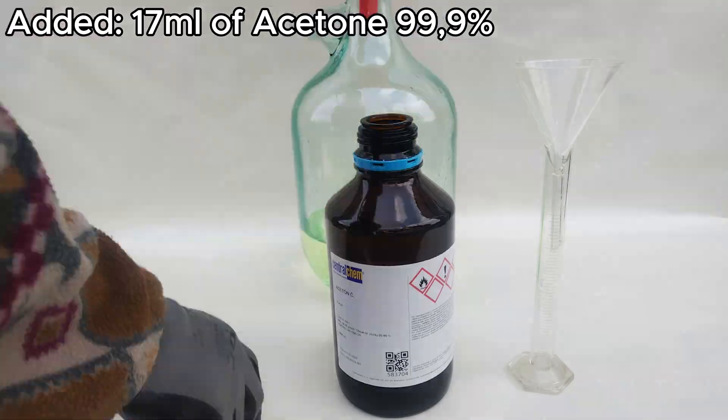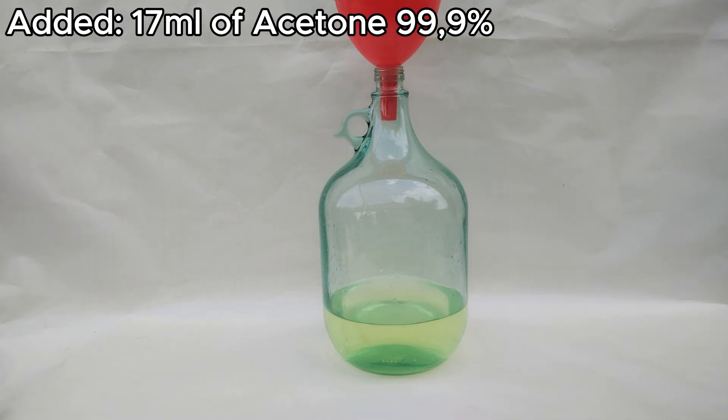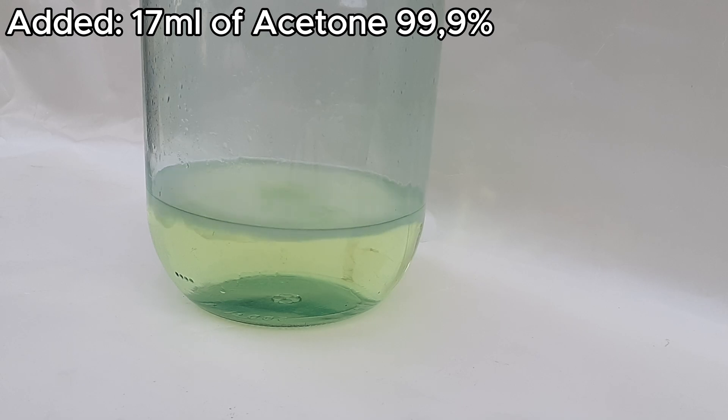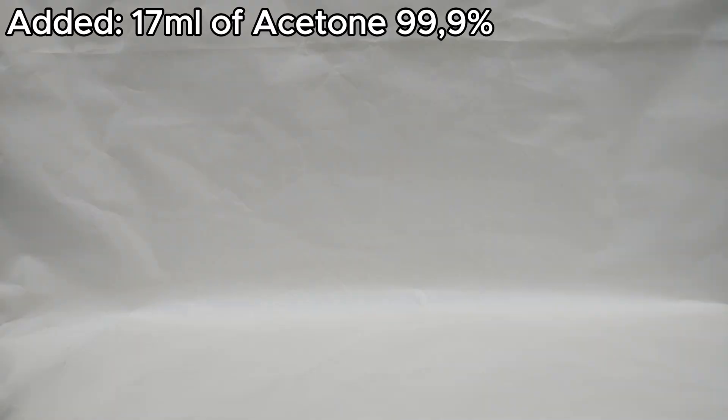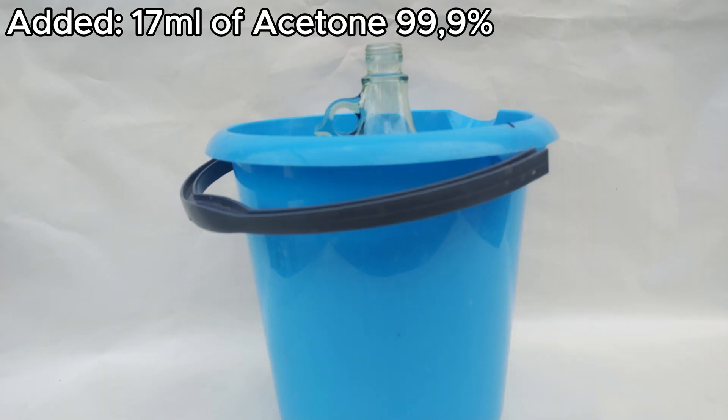I add 17 liters of acetone to start the chloroform production. As you can see, it forms this white, milky emulsion in the mix. It also forms a lot of heat, so I definitely recommend putting it into an ice bath or a bath with cold water.